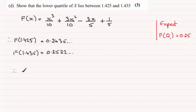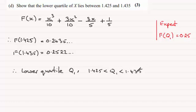So therefore what we can say is that the lower quartile, just write it in here, the lower quartile q1 is such that q1 must lie between 1.425 and 1.435. And I'll put, since f of q1 should equal 0.25. And I feel that should be sufficient for that answer.